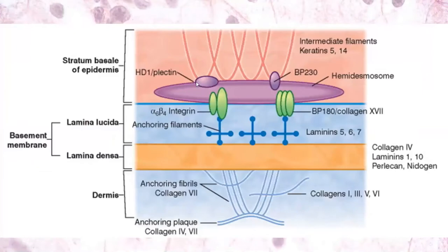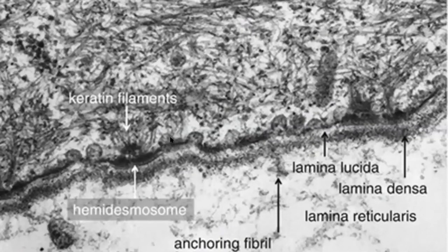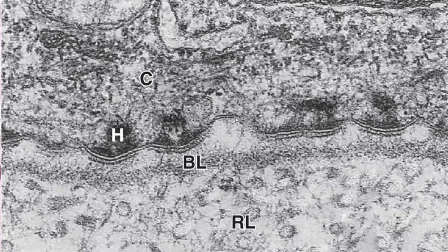Epithelial cells are attached to the basement membrane using a special kind of cell junction called a hemidesmosome. The hemidesmosome provides attachment of the epithelial cell to the basement membrane through proteins called integrins and components of the cytoskeleton — intermediate filaments such as keratin — attached to this hemidesmosome. In the electron micrograph, we can see keratin filaments attached to the hemidesmosome, which is attached to the lamina lucida of the basement membrane, which consists of lamina lucida and lamina densa.